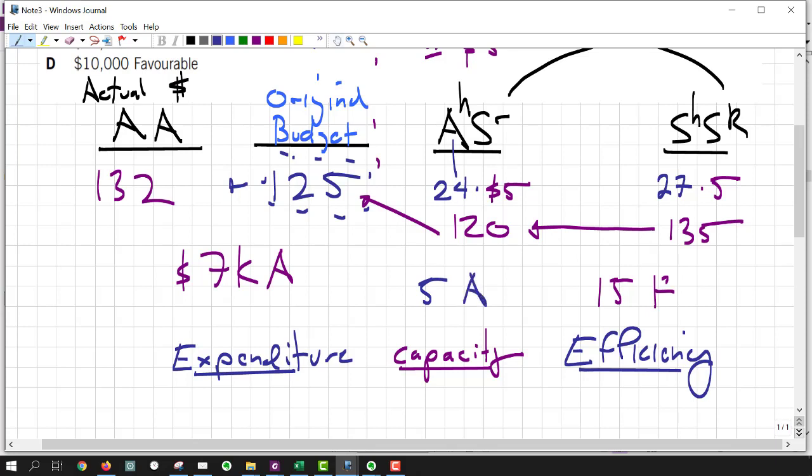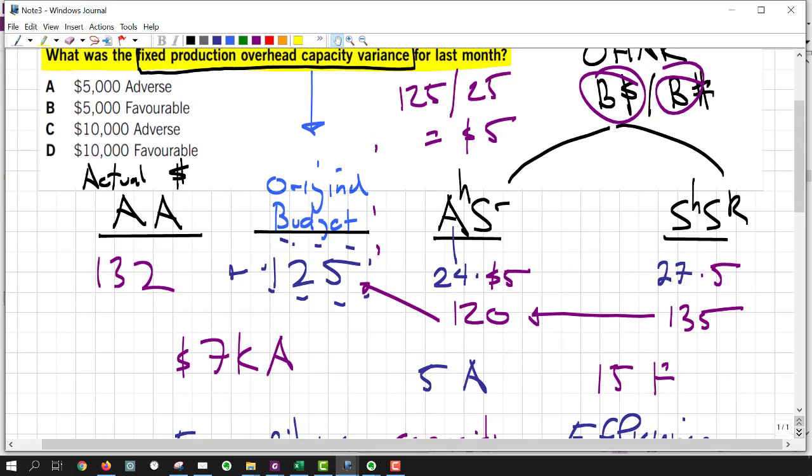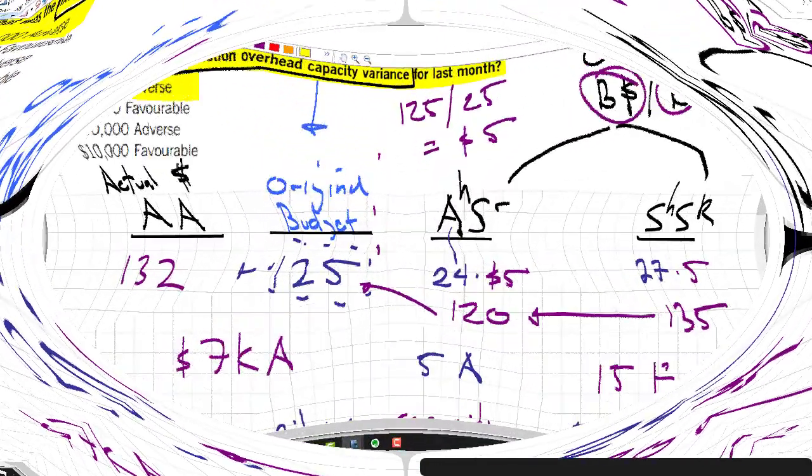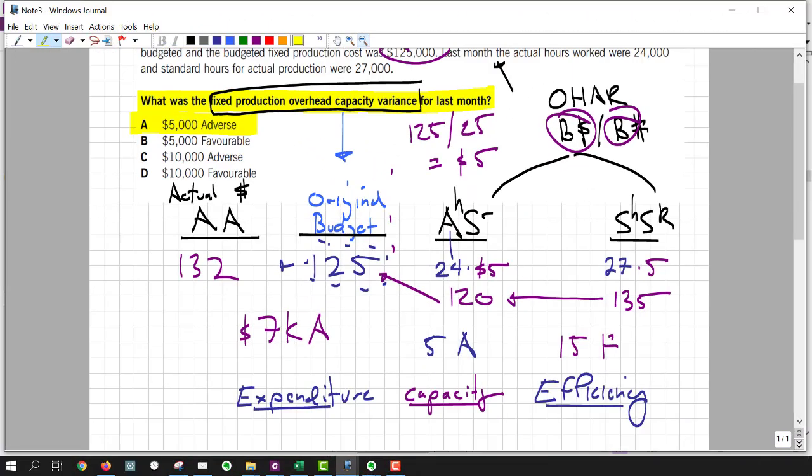There we go. That's the figure that I am looking for. So we come back here. Answer everybody is A. The fixed production overhead capacity variance is 7 adverse. Now let's just do that again really fast. I'll show you how I would do it if it was my exam.